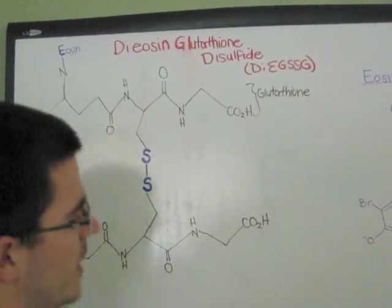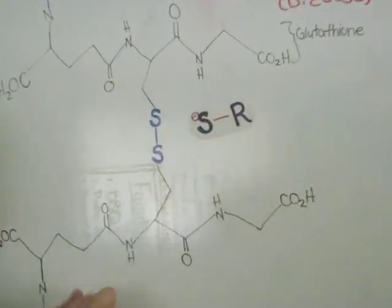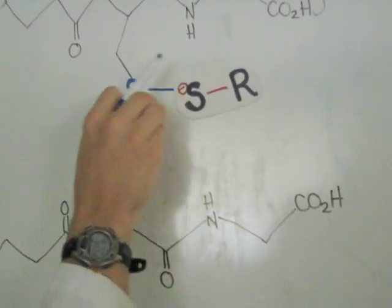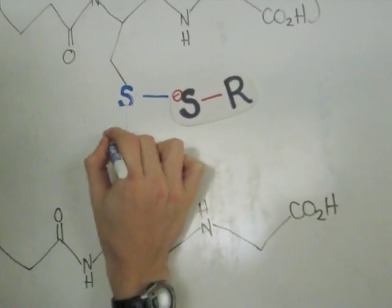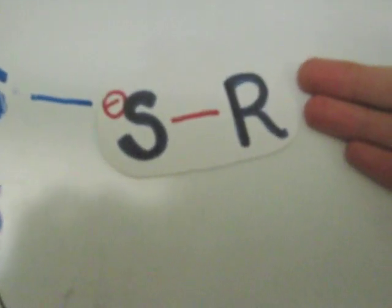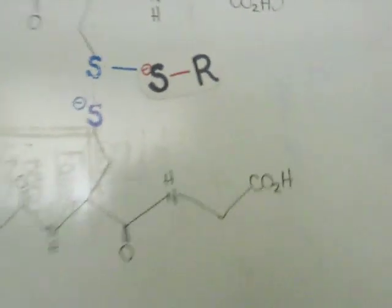That's where my handy-dandy thiolate comes in, attacks, which cleaves this disulfide bridge. And now we have two separate molecules. Where do we get these thiolates, you ask? Well, they come from thiols, which my esteemed colleague Adam will now explain.